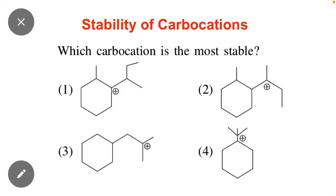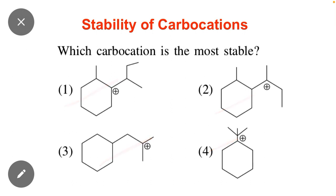Welcome to Chemistry Academy students. In this video we will study the most important questions of organic chemistry related to stability of carbocation. The question is: which carbocation is most stable? Here you can see that there are four carbocations given below and we have to identify the most stable carbocation.